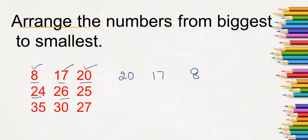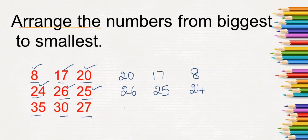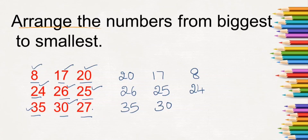Next, 24, 26, and 25. The biggest number is 26 — write 26. The next bigger number between 24 and 25 is 25. Write 25. And 24 is the smallest — write 24 at last. Next, 35, 30, and 27. The biggest is 35. The next bigger is 30. And the smallest is 27 — write at last.